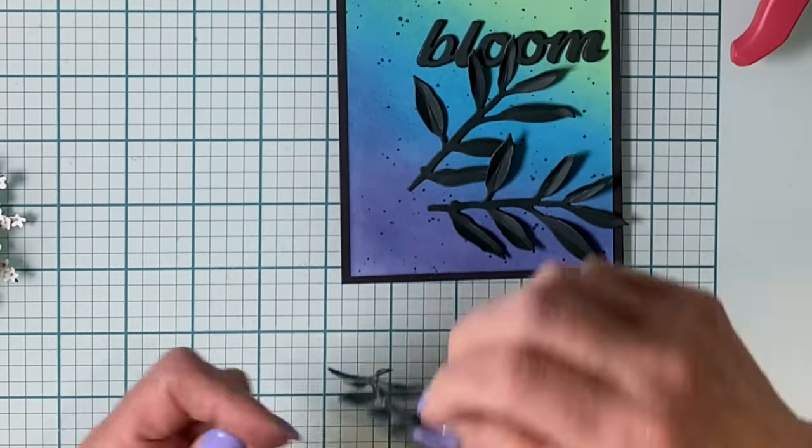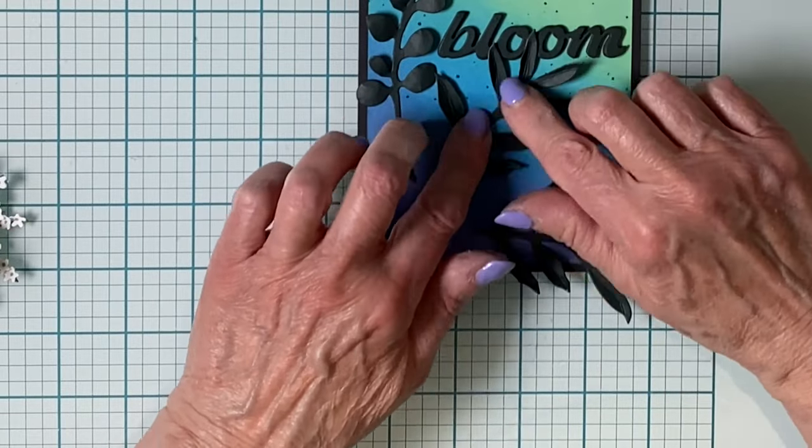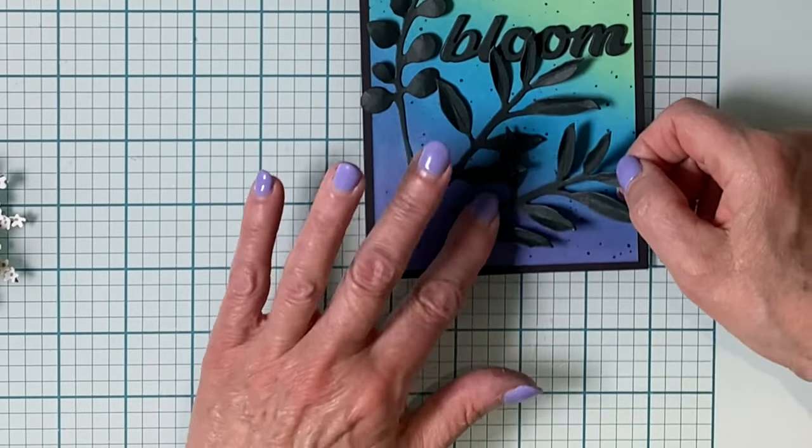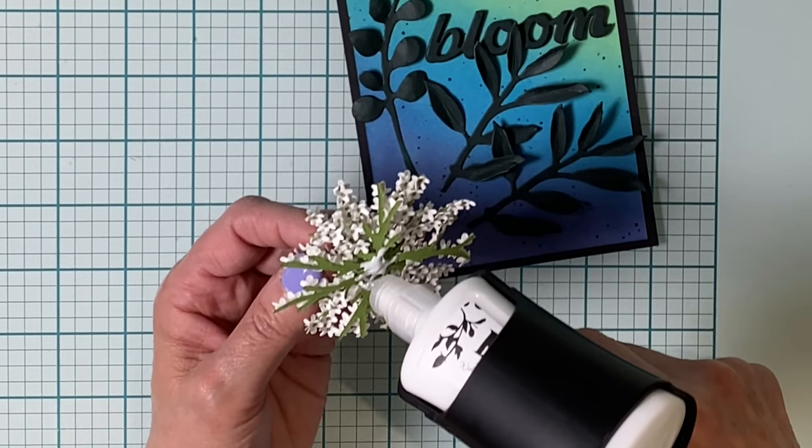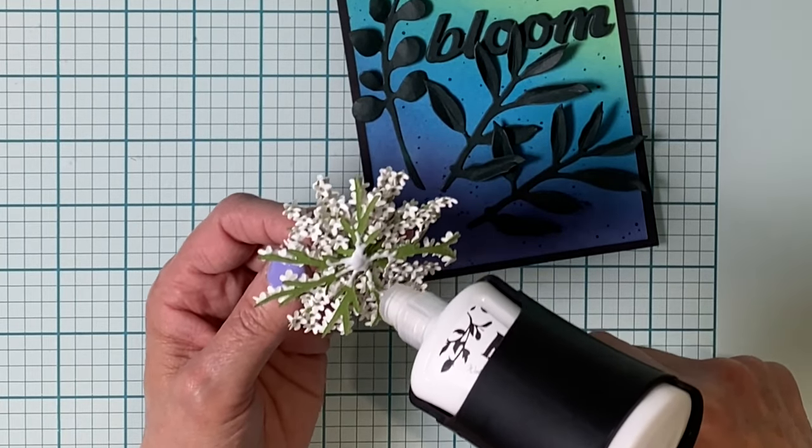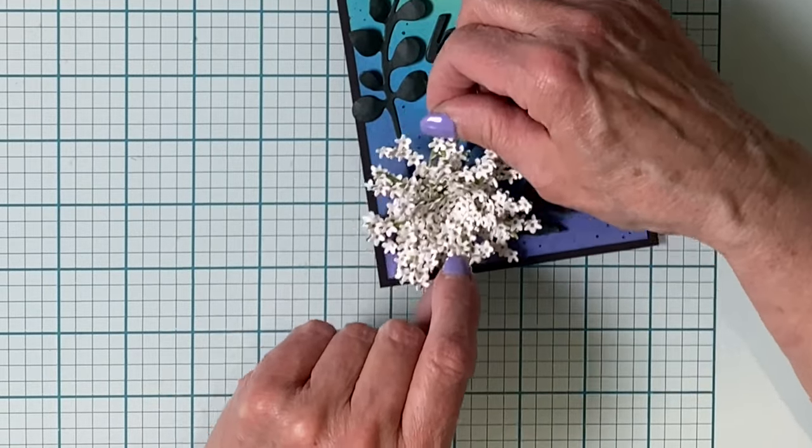The three sets of leaves are going to be adhered by applying the liquid adhesive down the central stem only. The Queen Anne's Lace Flower is definitely a statement piece. I'm going to use a good amount of glue to adhere it to that bottom left-hand corner.